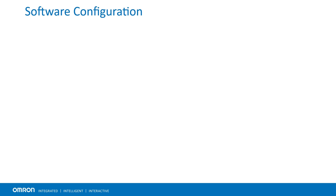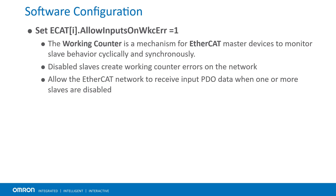On the software side, you will have to set a few parameters to the standard EtherCAT configuration before you disable any slave and activate the master. First, set ECAT[0].AllowInputsOnWCError to 1. The working counter is a mechanism for EtherCAT master devices to monitor slave behavior in case of invalid or inconsistent data. When devices are disabled from the network, it creates a working counter error and prevents PDO communication. Setting this parameter allows PMAC to receive PDO data when one or more slaves are disabled.